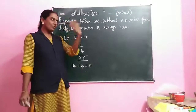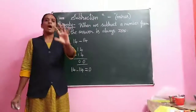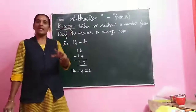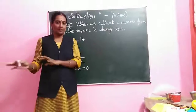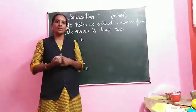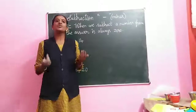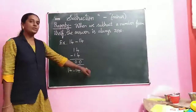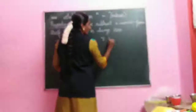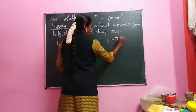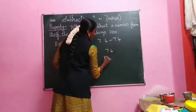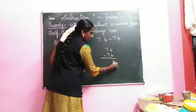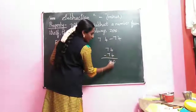For example, if you have 10 chocolates and your friend asks for all 10, you give them to your friend — so how many chocolates are you left with? Nothing — zero! So 14 minus 14 equals 0. Another example: 74 minus 74. 4 minus 4 is 0, 7 minus 7 is 0. So the answer is 0.